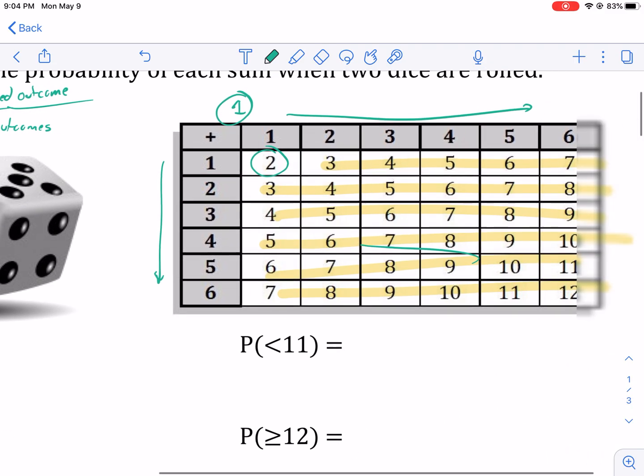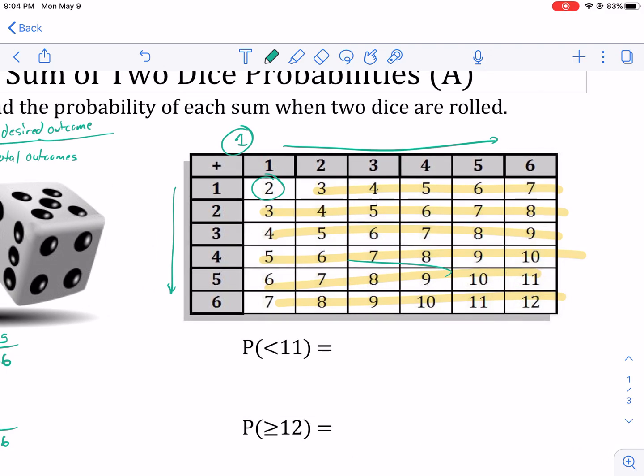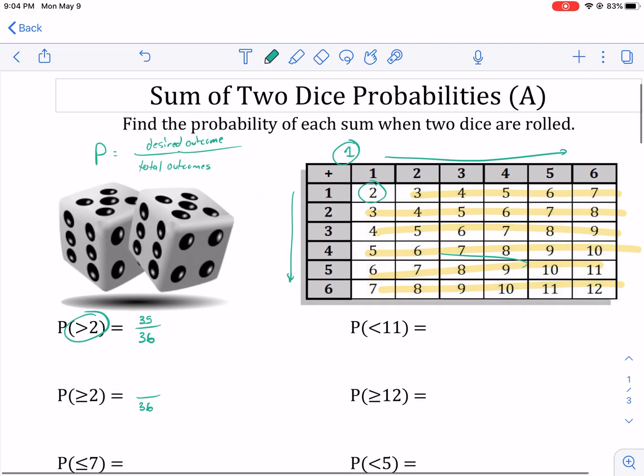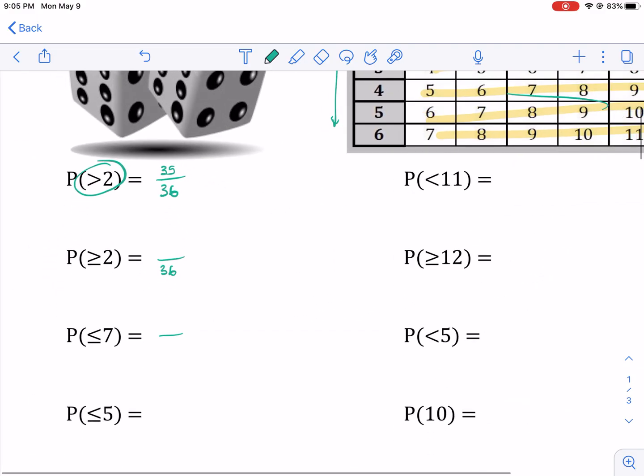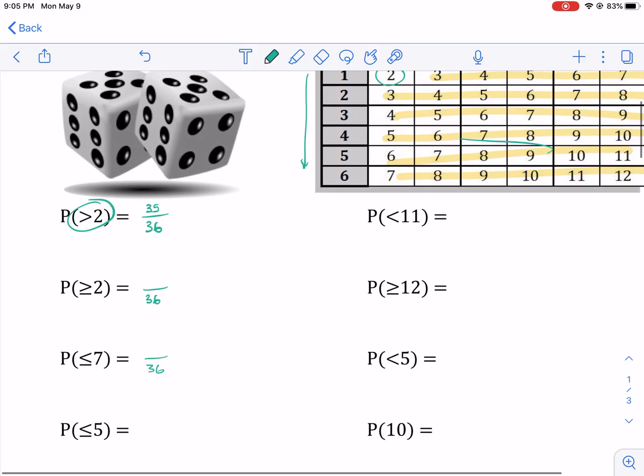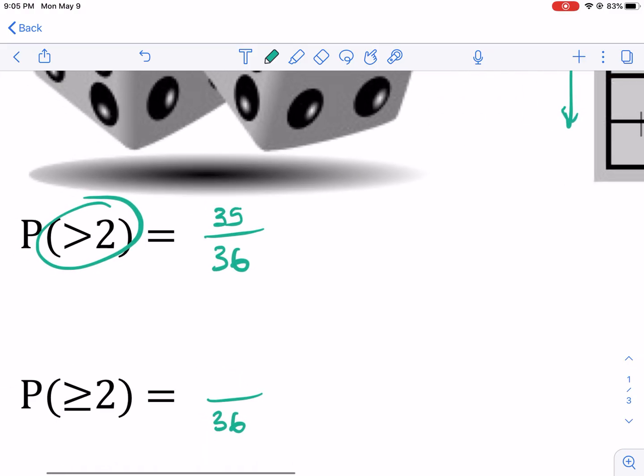There's 36 possible combinations of dice that you can have. The one with the two, the one with the five, the one with the six, the three with the four. You get the point. There's 36 possible combinations. So all of these are going to be out of 36. So this one is 35 over 36.